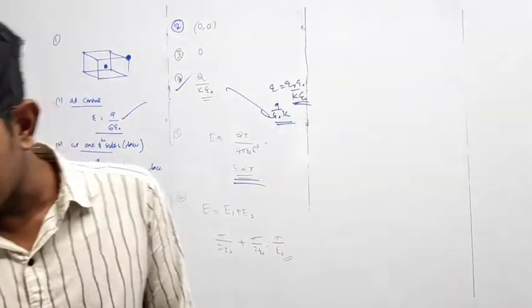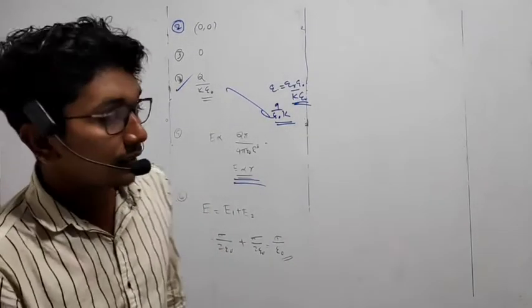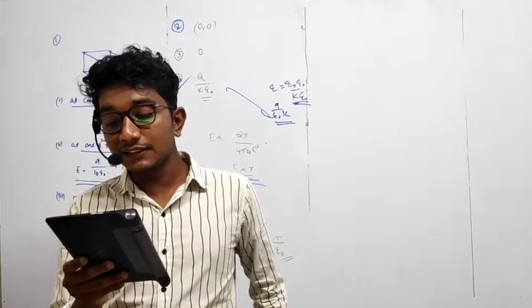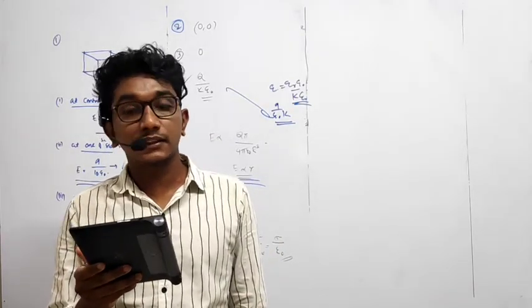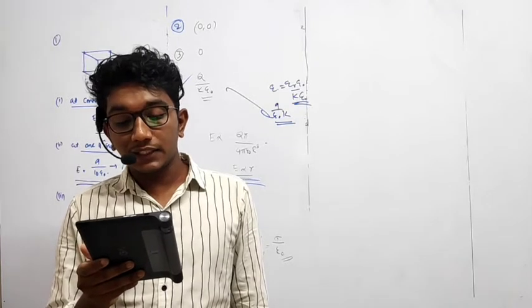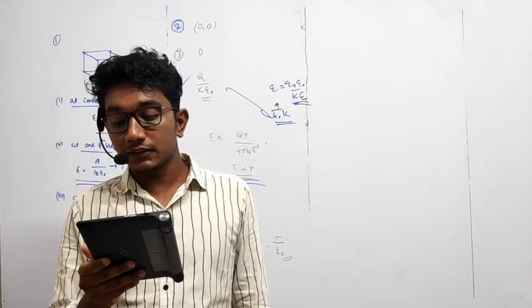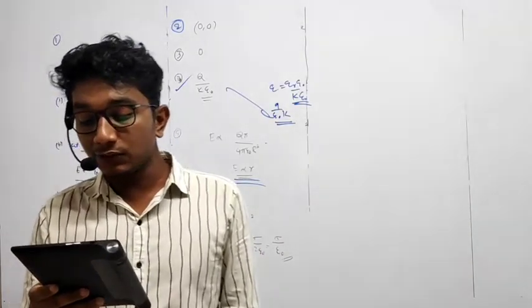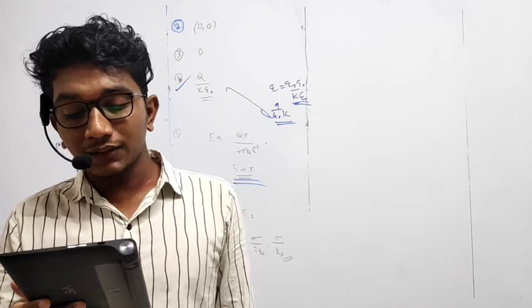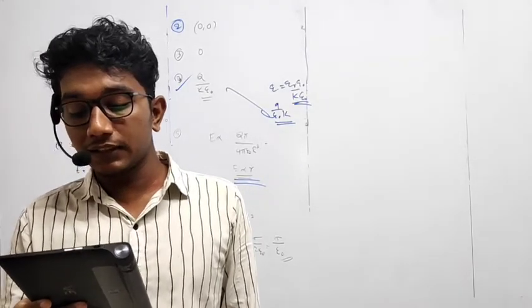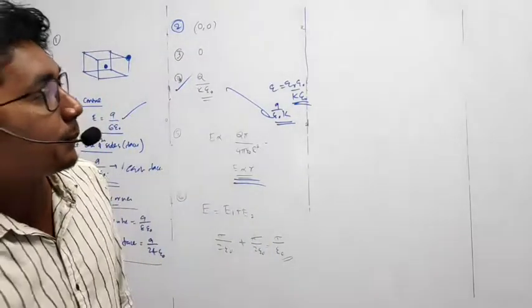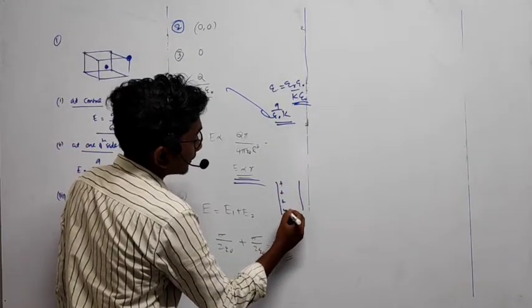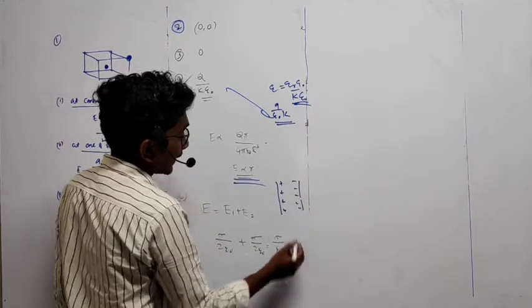The last and final question. You have to solve this question because I have just taught you this. Two infinitely long parallel conducting plates having surface charge densities plus sigma and minus sigma respectively are separated by a small distance. The figure is given. So the medium between the plates is vacuum.